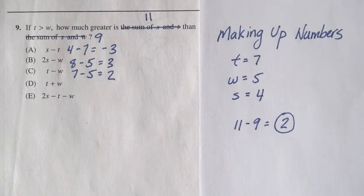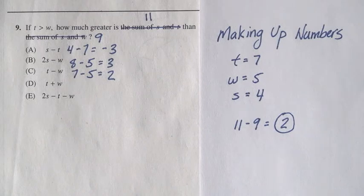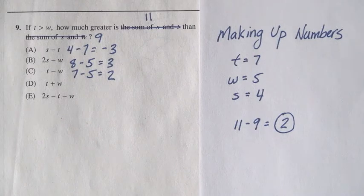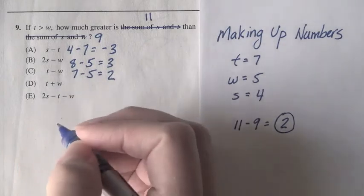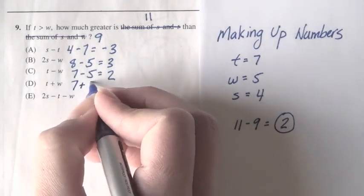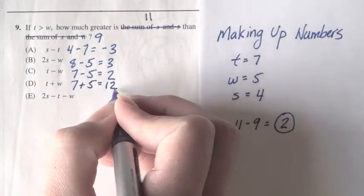There's always a possibility that we've managed to make up a set of numbers that will mess up our results. So, let's just make sure that they're all correct. So, t plus w, that's 7 plus 5, or 12, so no.